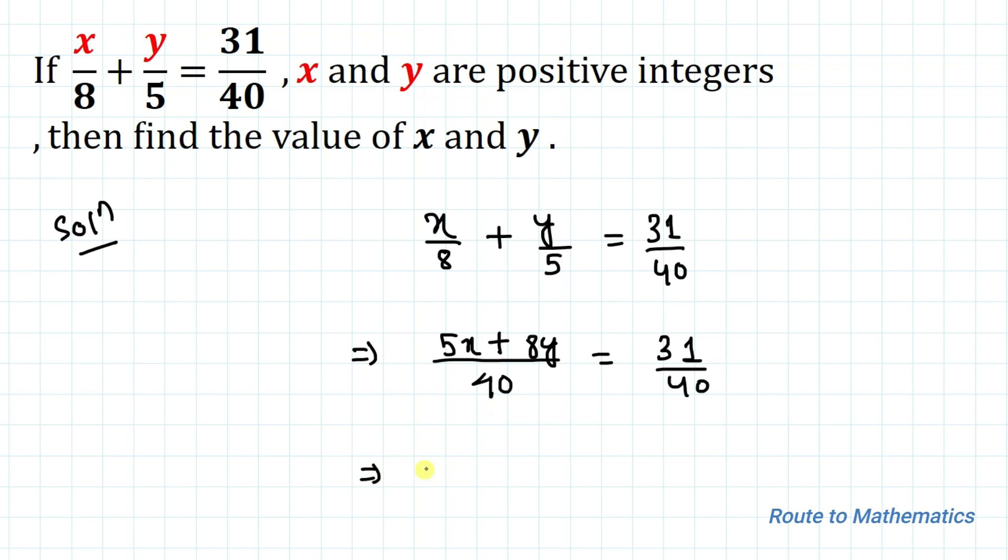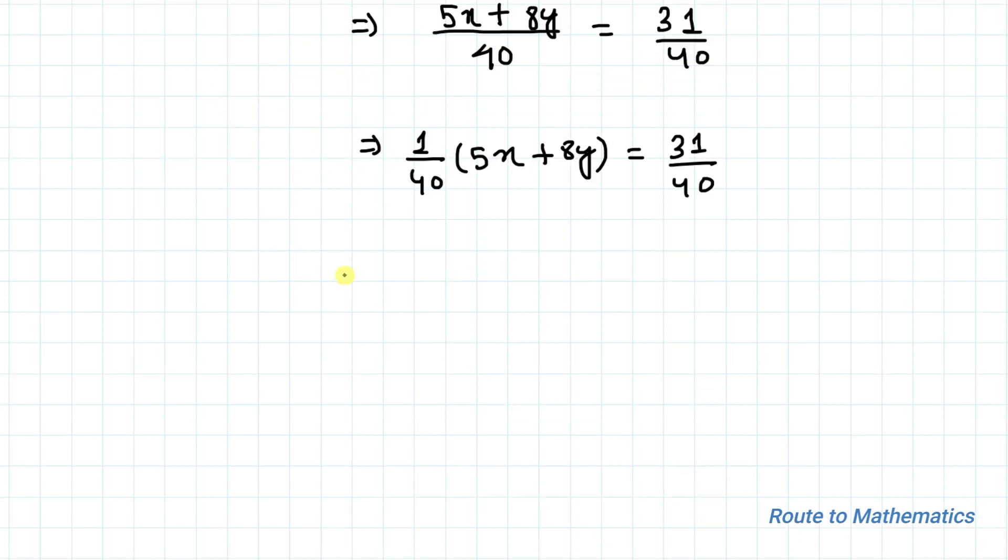In the next step we can take common 1/40 multiplied with 5x + 8y equals to 31/40. Now let's multiply 40 on both sides of the equation. So 40 divided by 40 multiplied with 5x + 8y equals to 31/40 multiplied with 40. The 40s get cancelled out on both sides.